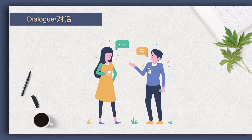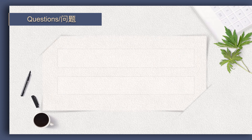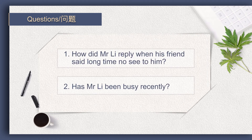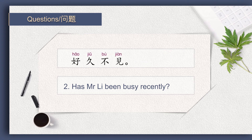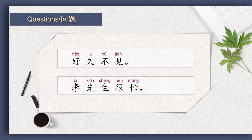Please look at the picture in Lesson 2 Dialogue 3 first. Then answer the questions. 李先生好久不见。 好久不见。 工作忙吗? 忙。 你呢? 我也是。 How did Mr. Li reply when his friend said long time no see? 好久不见。 Has Mr. Li been busy recently? Yes — 李先生很忙。